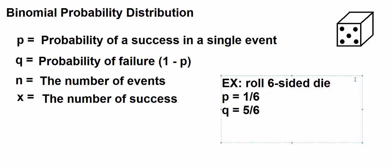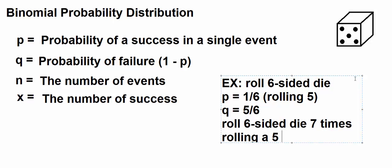Let's say we roll a six-sided die seven times. We roll a six-sided die seven times. A success is rolling a five.